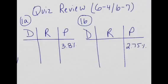We're going to begin the quiz review for 6-4 and 6-7. We're going to look at the DRP chart and change 3 and 8 tenths percent into decimals and ratios.